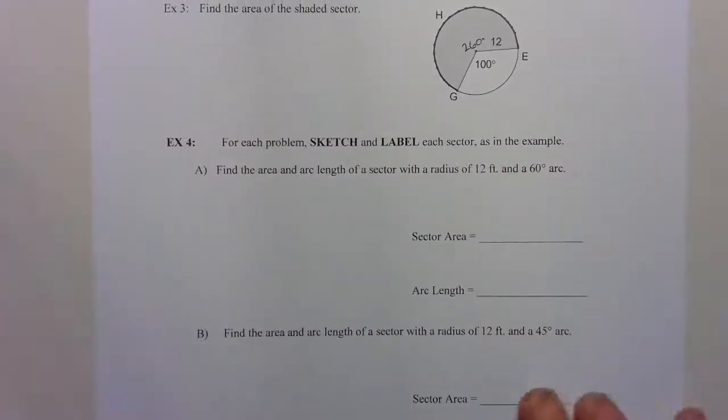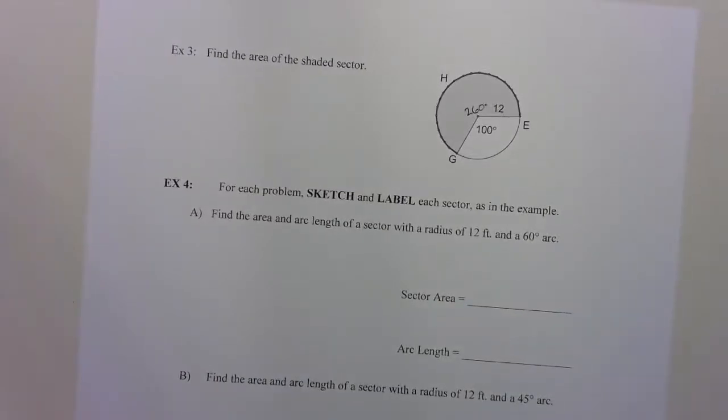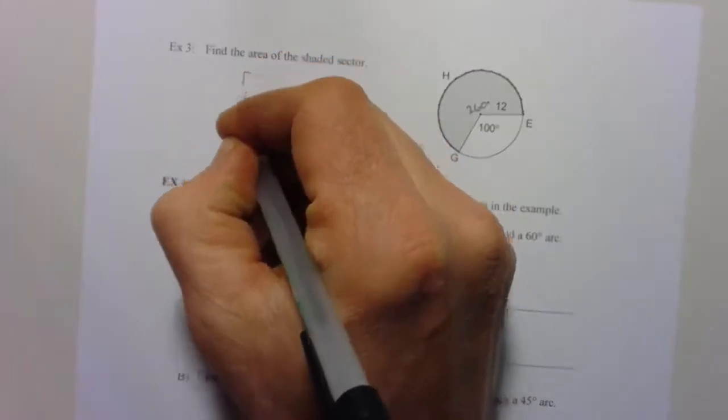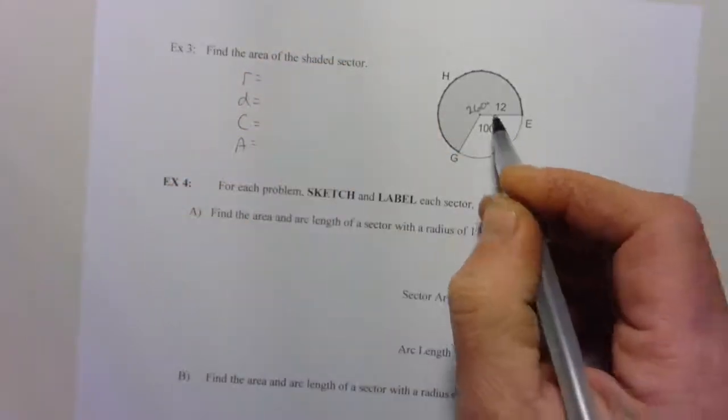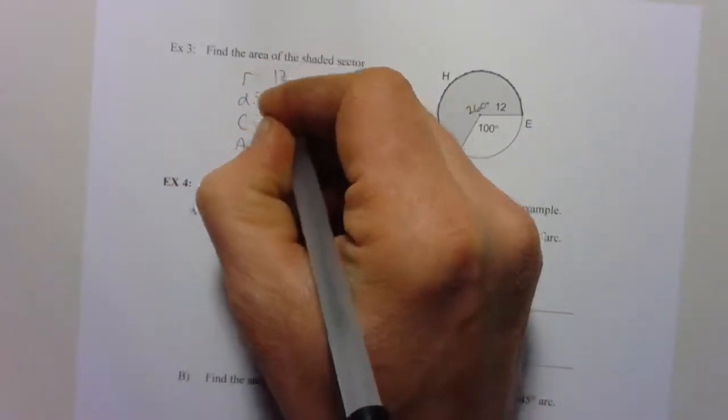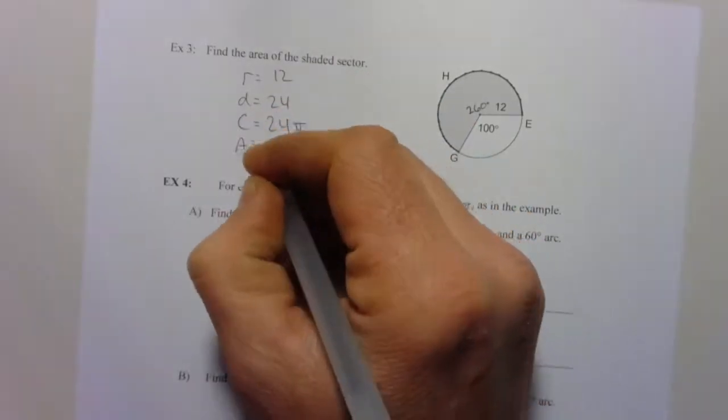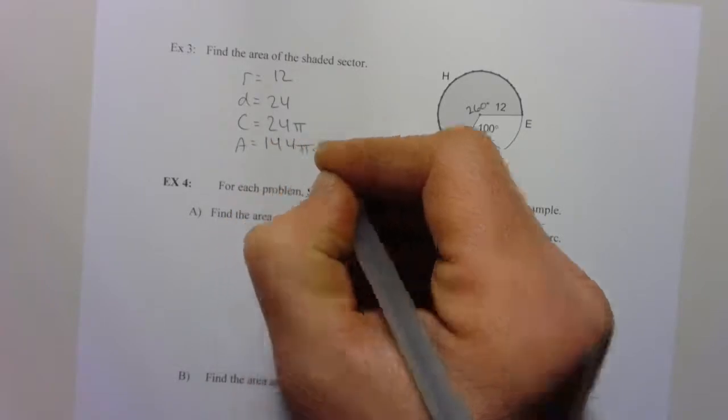Let's try example three. All right. I kind of wrote this out before. Let's finish it. Radius, diameter, circumference, area. Radius is given. Diameter is twice that. Circumference is pi times diameter. Area is pi r squared.